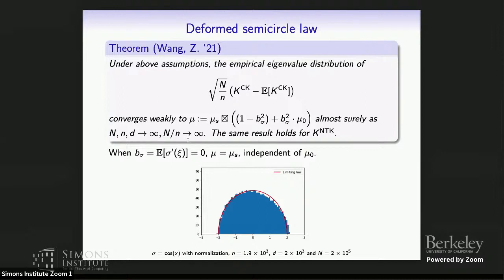Here I plot a picture for the case where the derivative term b_sigma is zero. In this expression, if b_sigma is zero, this term becomes one and is independent of the distribution of the data matrix, so you get the semi-circular law. To make b_sigma zero, you can take a cosine function and perform centering and normalization.